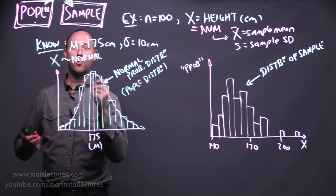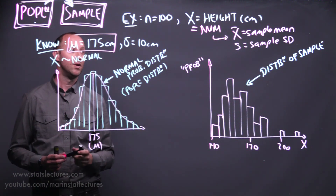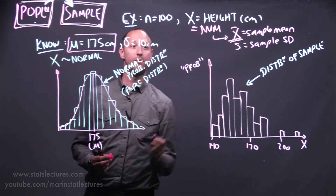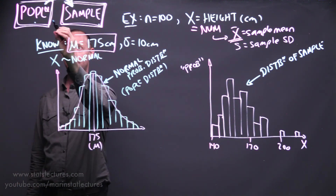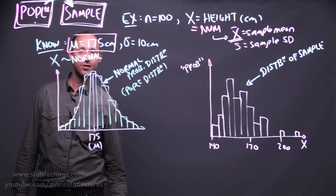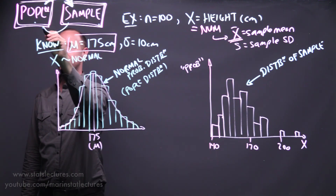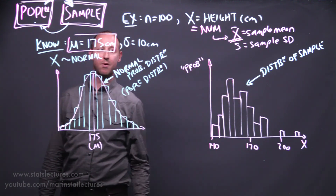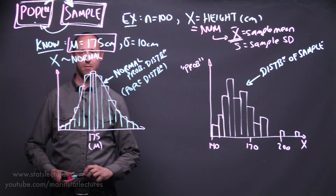If we know that the true mean is 175 centimeters, what types of sample means are likely to show up when we collect some data? Building up this understanding of — if we know the truth, how likely are certain things to show up in some data — is going to help us do statistical inference. Given our sample of data, what statements can we make about a population? That's going to be our next topic for discussion.